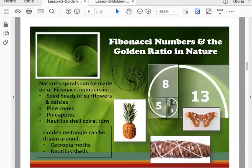Okay, so let's talk about the Fibonacci numbers and the golden ratio in nature. Nature's spirals can be made up of Fibonacci numbers found in the seed heads of sunflowers and daisies. We talked about sunflowers - go ahead and underline the word sunflowers. Also found in pine cones, pineapples, and the nautilus shell spiral turn pictured right here.